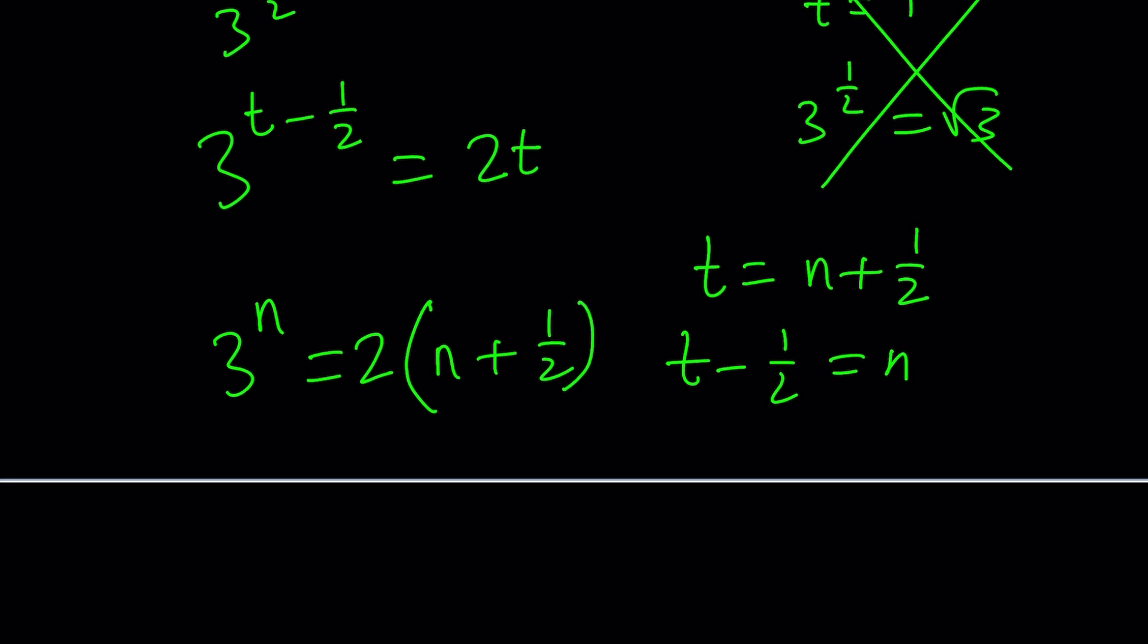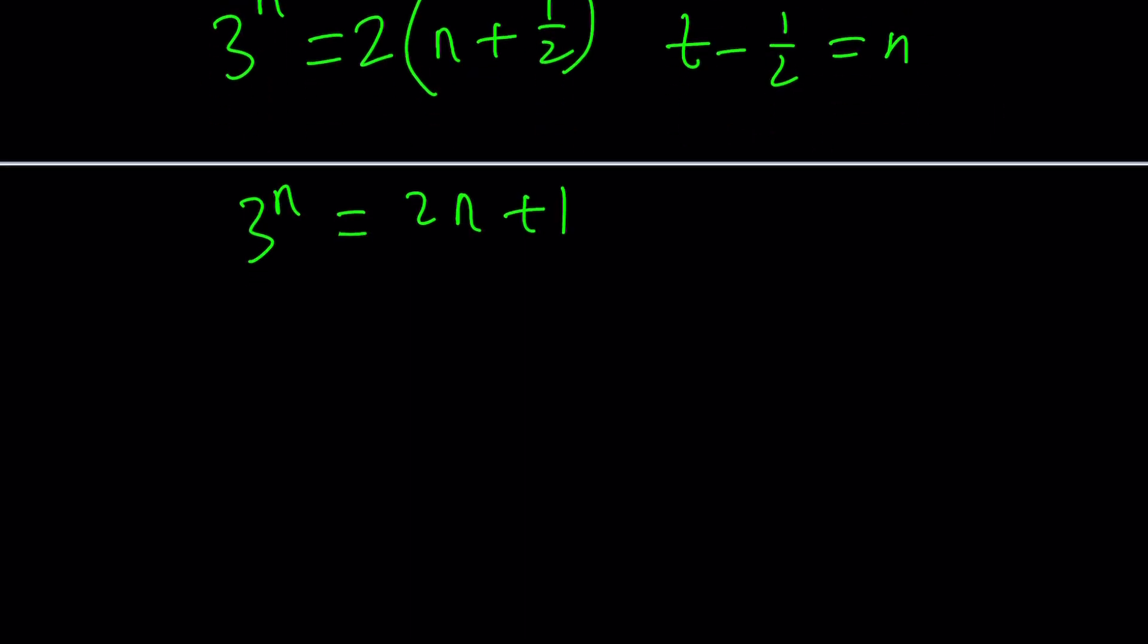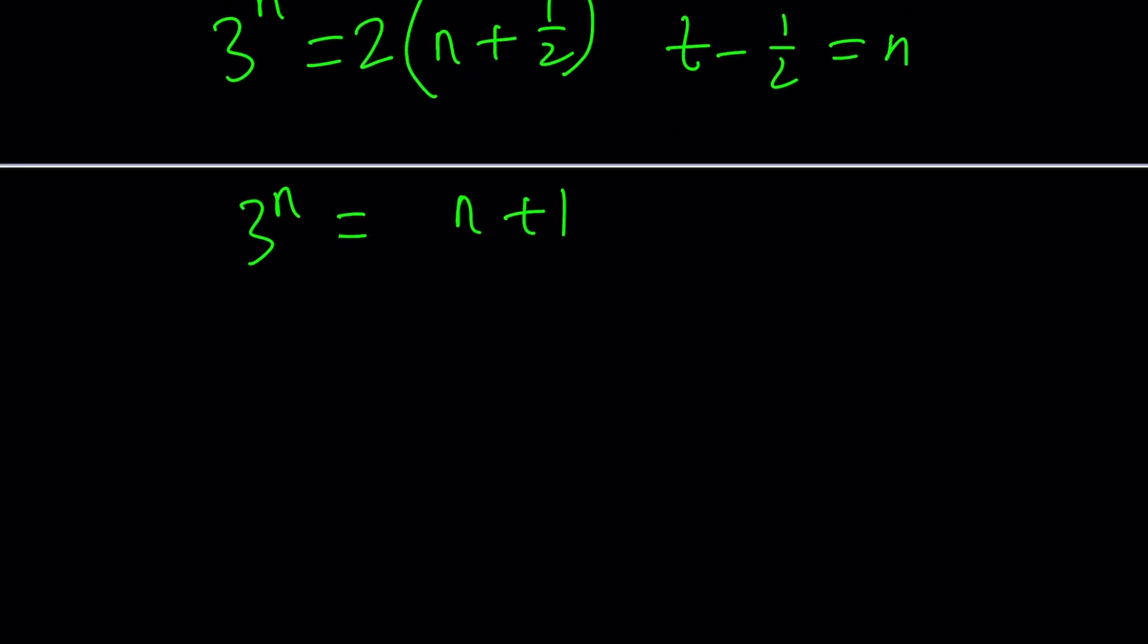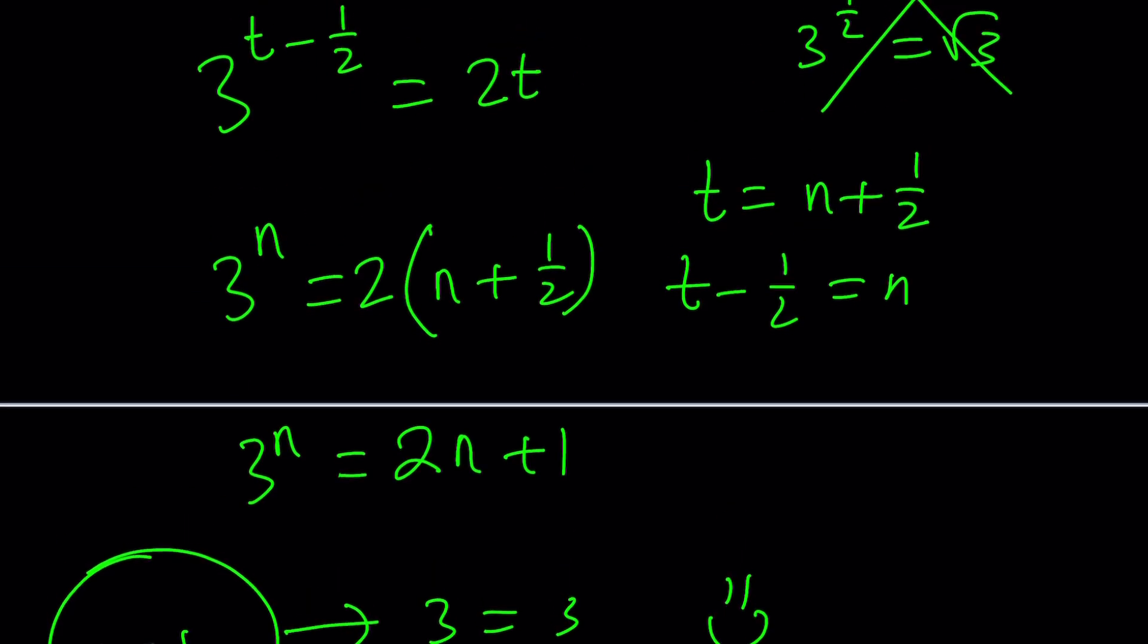Ta-da! This is going to give us a beautiful equation. Guess what? It is super easy to solve after so many transformations. You know how to solve this. n equals 1. Doesn't it scream like n equals 1? Yeah, n equals 1, because 3 equals 3. Obviously, that makes sense. If n equals 1, then from here, t minus 1/2 equals 1, which means t equals 3/2.